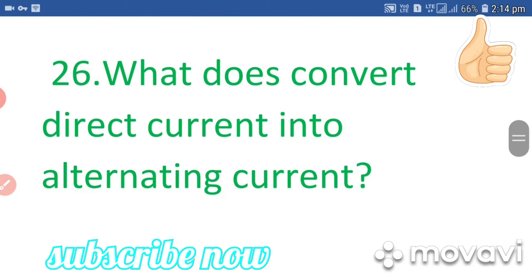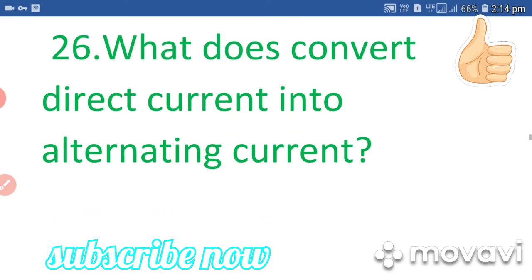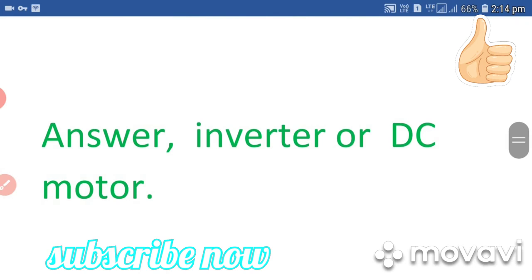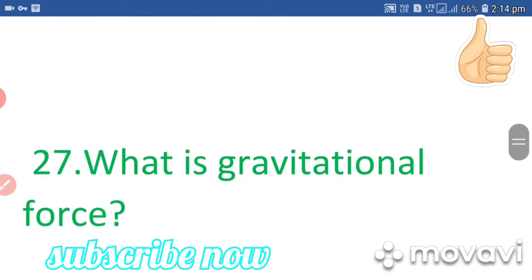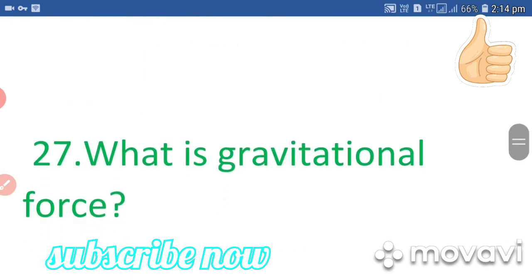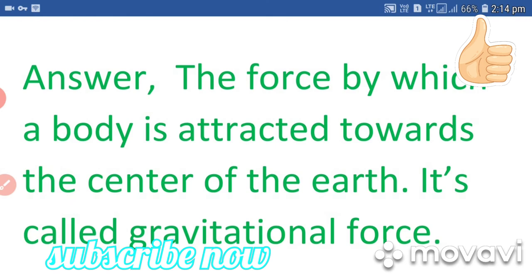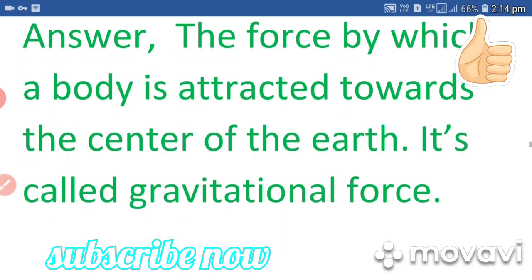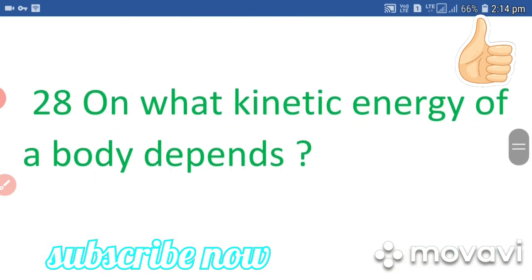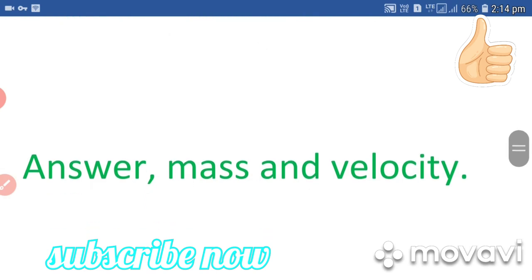Question 26: What converts direct current into alternating current? Answer: Inverter. Question 27: What is gravitational force? Answer: The force by which a body is attracted towards the center of the Earth is called gravitational force. Question 28: On what does the kinetic energy of a body depend? Answer: Mass and velocity.